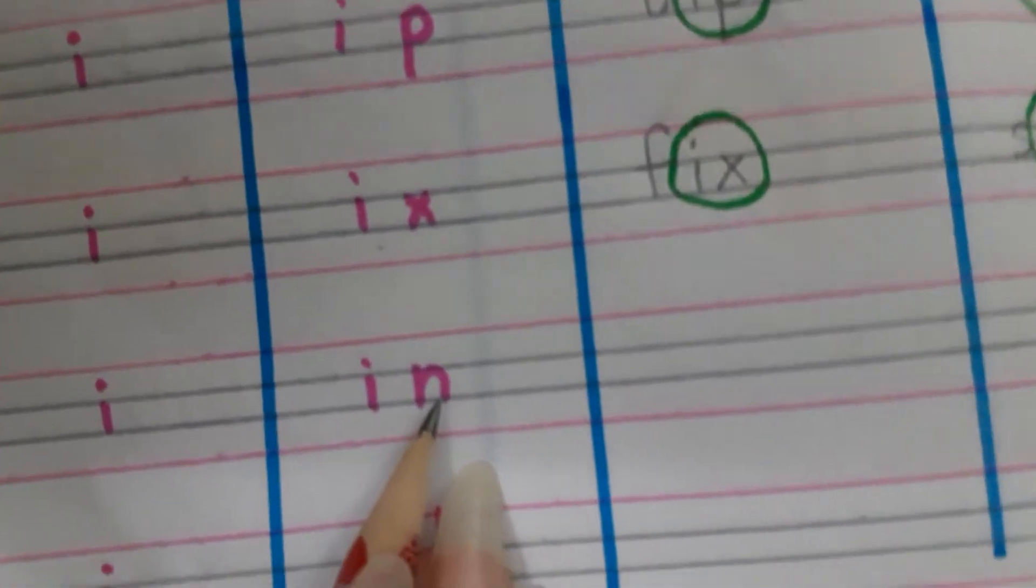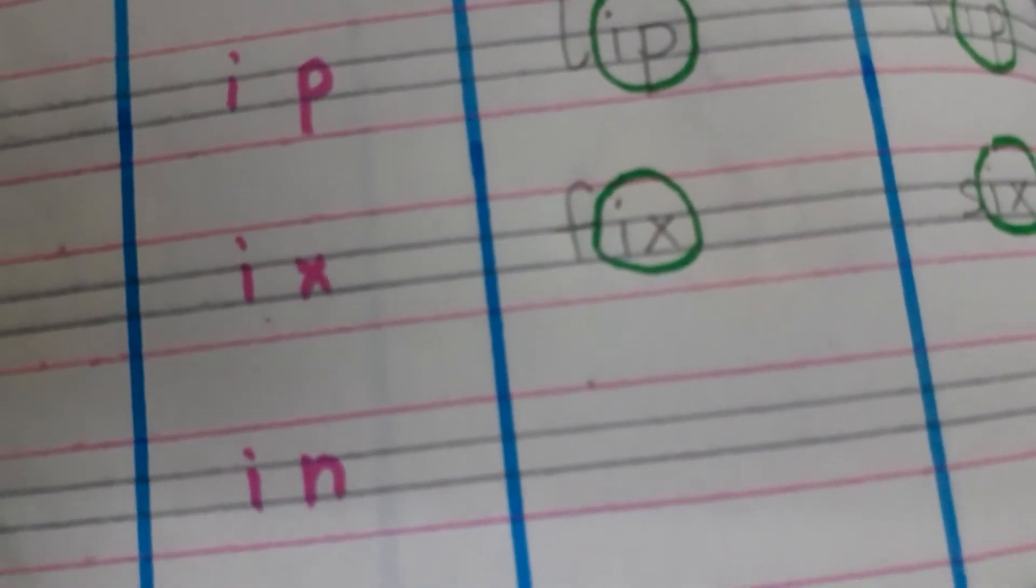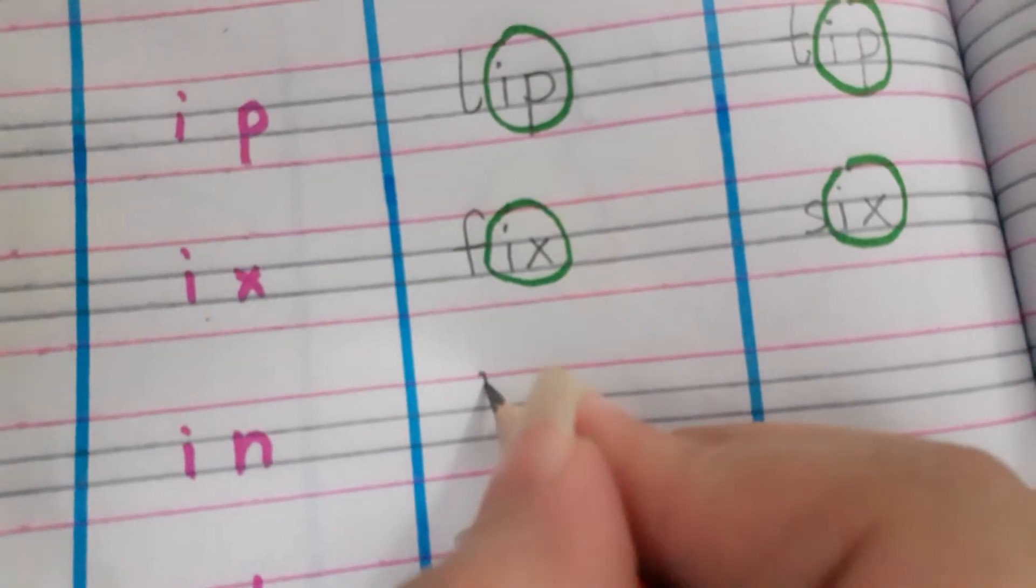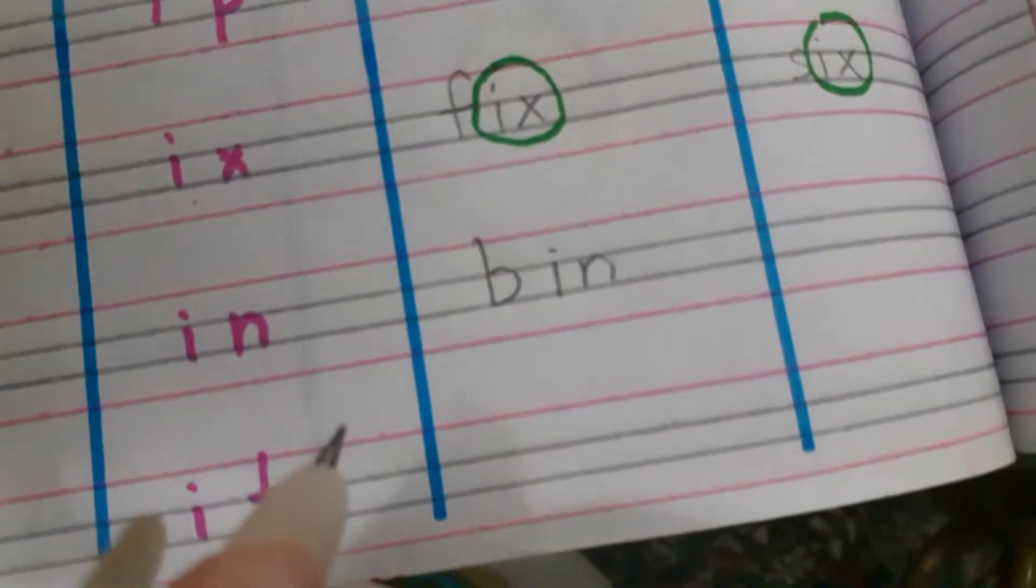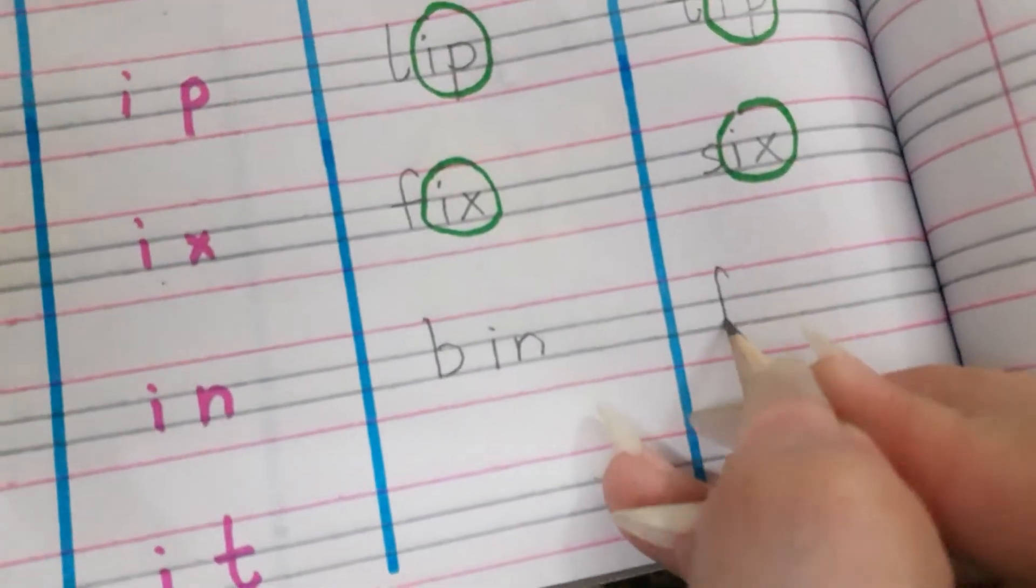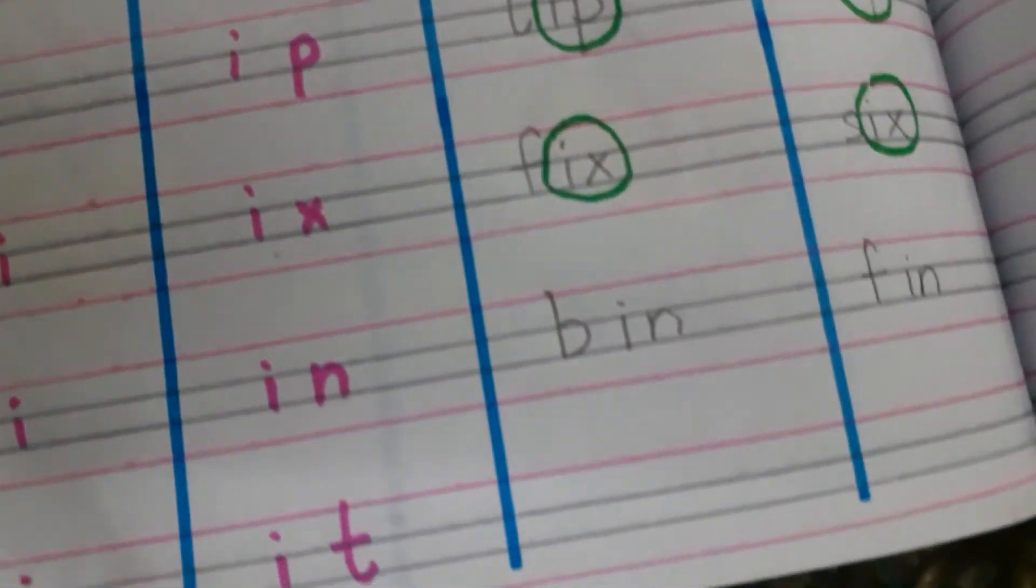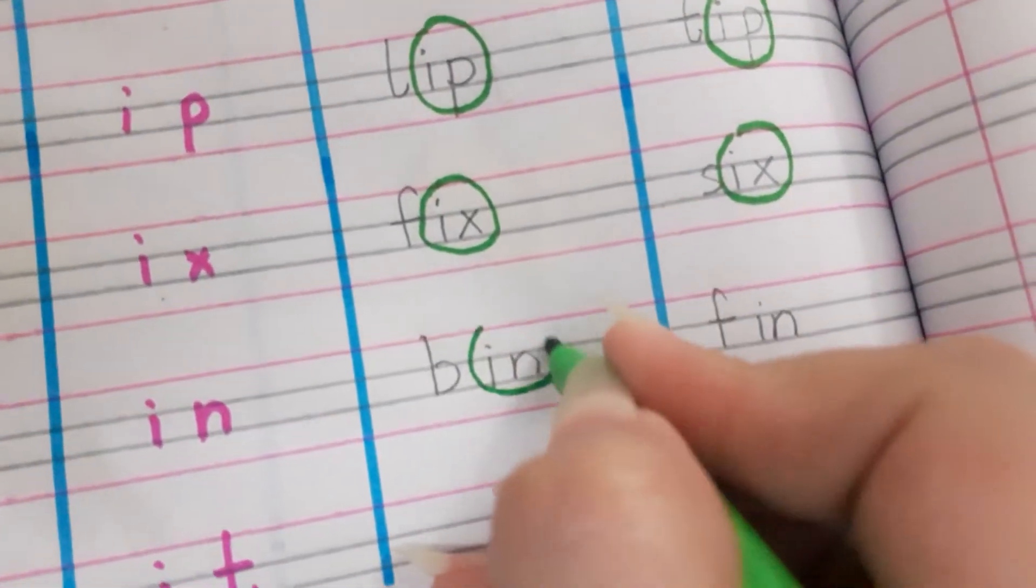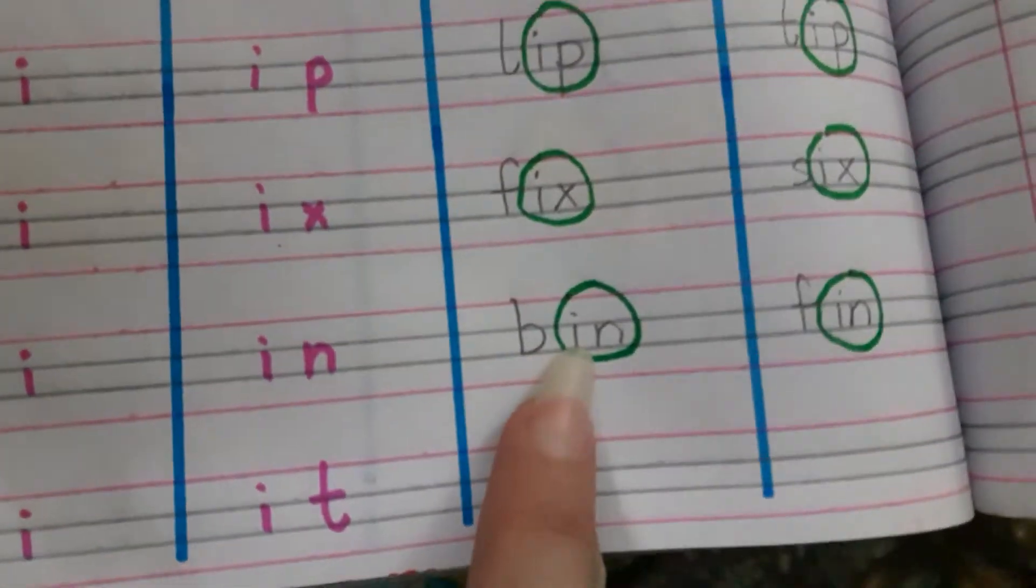Second last is in. The place where we used to throw our trash or keep our garbage, that is bin. And fin - fin is a body part of fish. In, bin, fin.